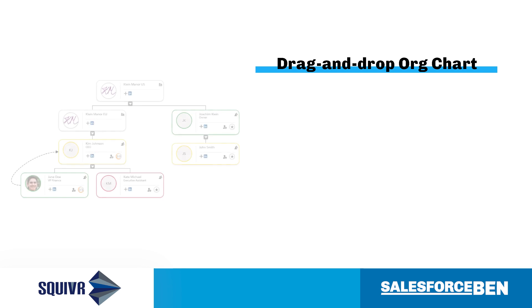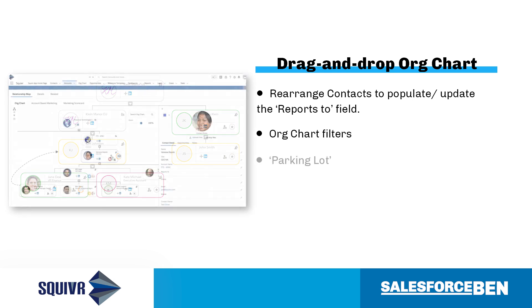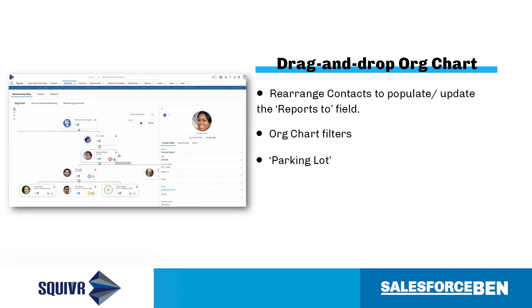The standard reports-to field is used to build the hierarchy. You can populate or update that field by using drag and drop to arrange the contact records exactly where they should be, as in related to the person they're reporting to. In terms of usability, you can add filters based on account or contact fields to make the chart more searchable.